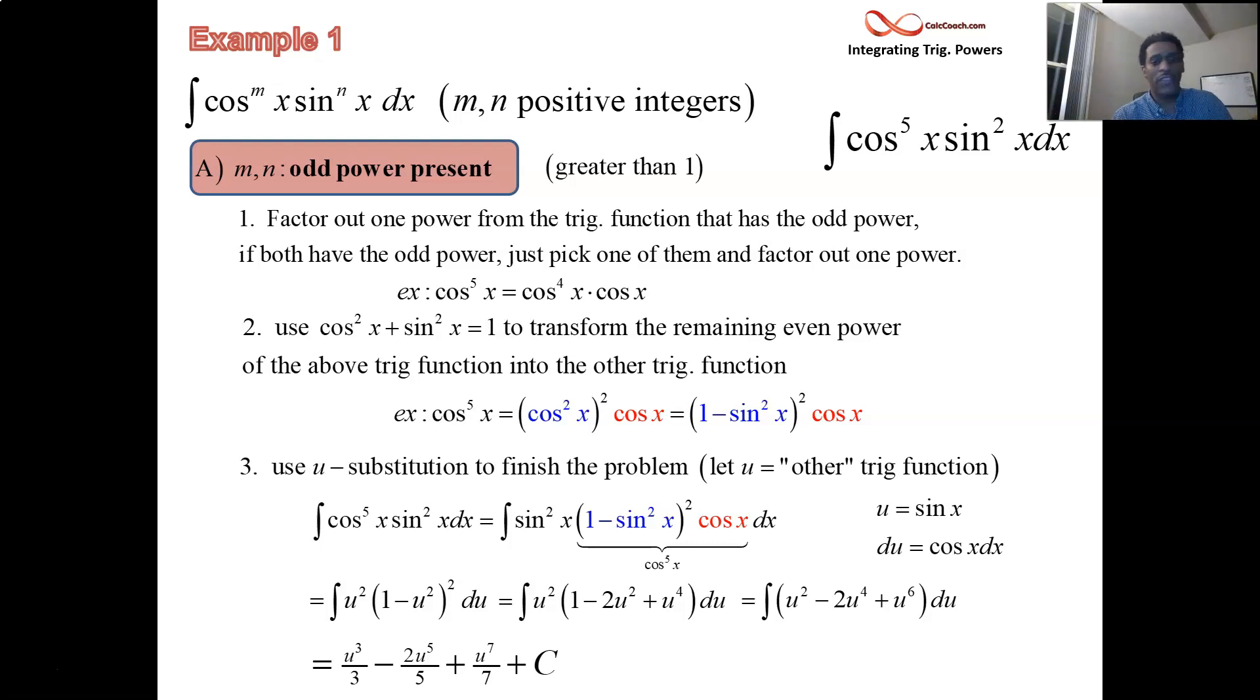So just go sub back in, replace all those u's with the sine of x. And you did it, you did a difficult question. One-third the sine cubed of x, two-fifths the sine fifth of x, and one-seventh the sine seventh of x, plus a c.